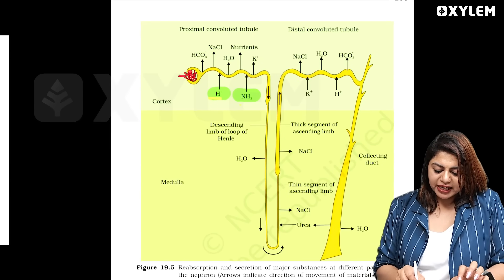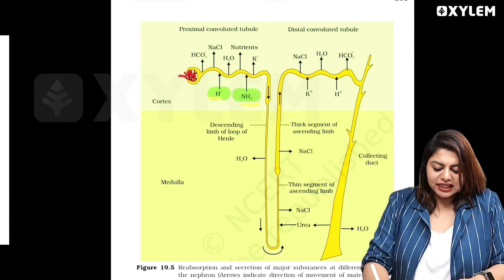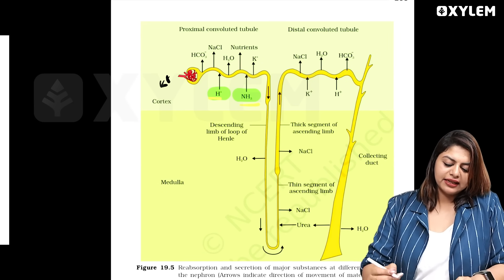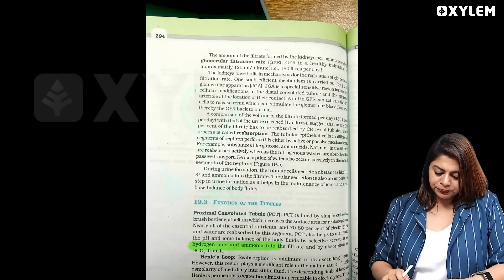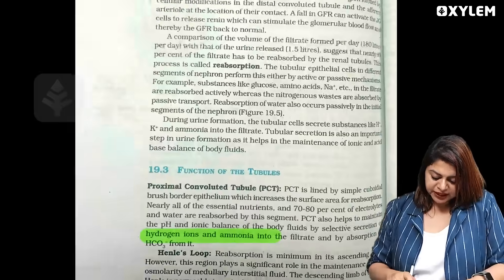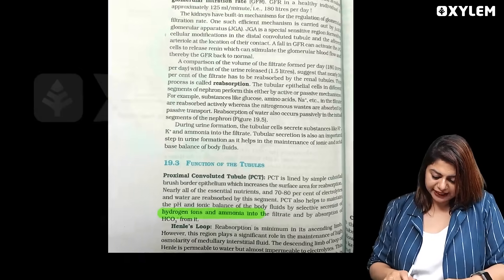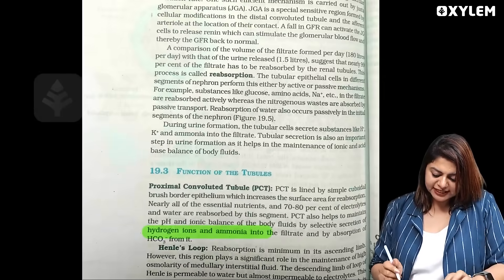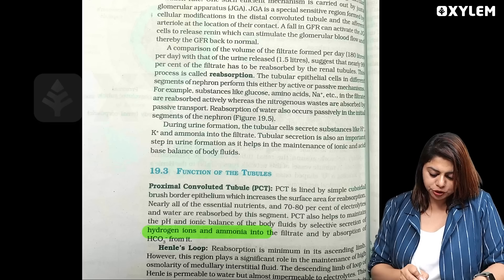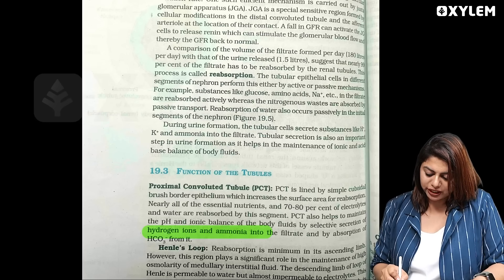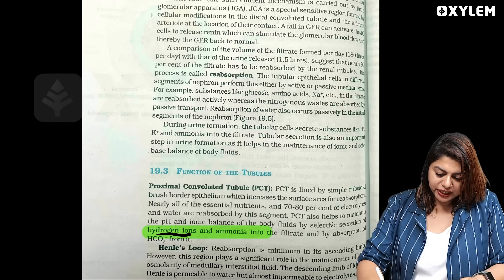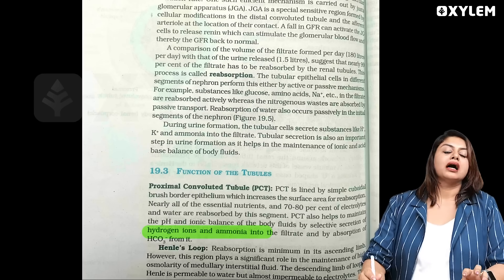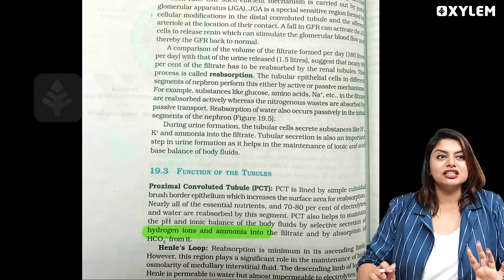H plus is there, ammonia is there, but potassium - K plus is there or not? Now, we will check the latest version. You can see that sentence is changed. PCT also helps to maintain the pH and ionic balance of body fluids by selective secretion of H plus ions and ammonia into the filtrate. Potassium is not mentioned now.